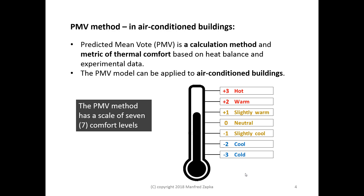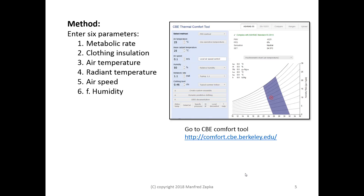Since PMV is a calculation method, we can calculate specific values. We use 6 parameters: metabolic rate, clothing insulation, air temperature, mean radiant temperature, air speed, and humidity.